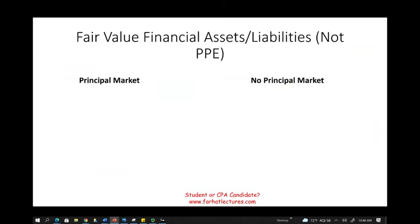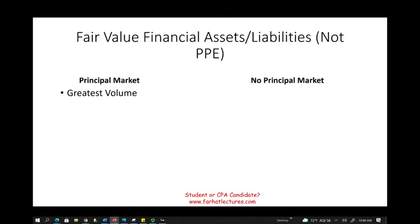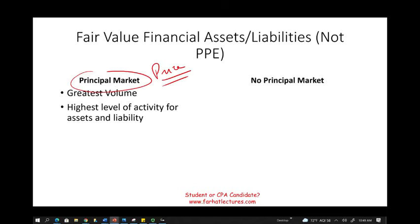So how do we determine the fair value of a financial asset or financial liability? It starts very easy. If we have a principal market — meaning the problem tells us or hints that this market has the greatest volume, the highest level of activity for that asset or liability — then whatever that principal market price is, you go with that price. Very easy.